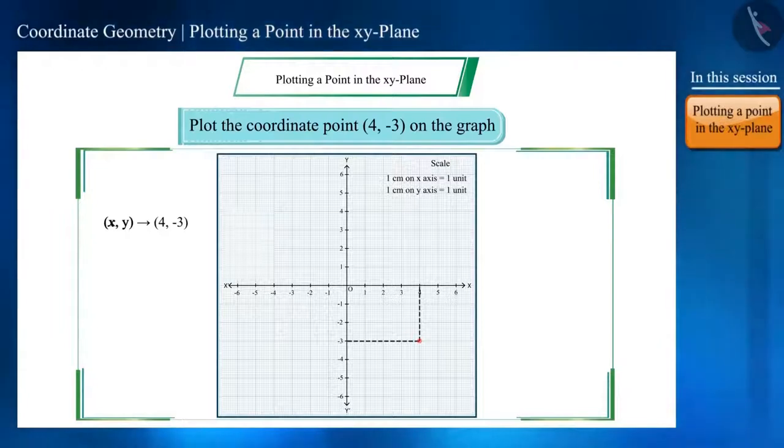And now, it is representing the point (4, -3). In which quadrant is it located? This point will be in the fourth quadrant.